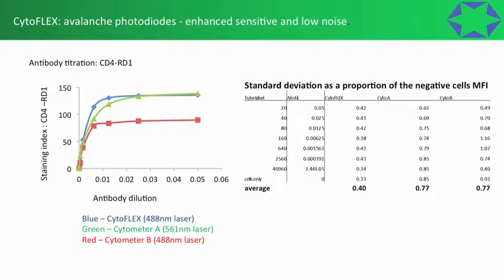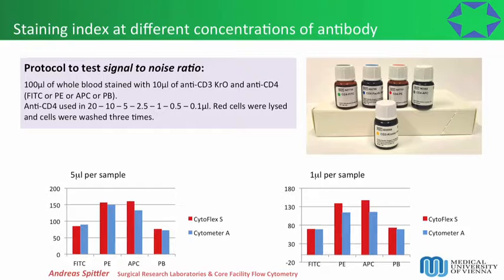This comes down to the avalanche photodiodes (APDs) in the CytoFLEX — they have very low noise. With a staining index calculation, because you divide by two times the standard deviation of the unstained, if you've got very low noise or very low standard deviation from the unstained, you're going to get a higher index value. Expressing the standard deviation as a proportion of the negative cells' median fluorescent intensity, the CytoFLEX values were all about 0.3 across the titration, whereas the other cytometers were higher. It was the low noise giving enhanced resolution and better staining index.